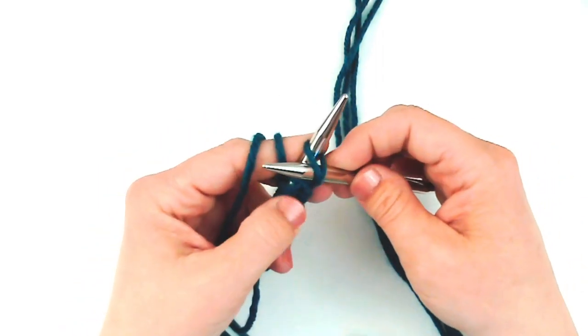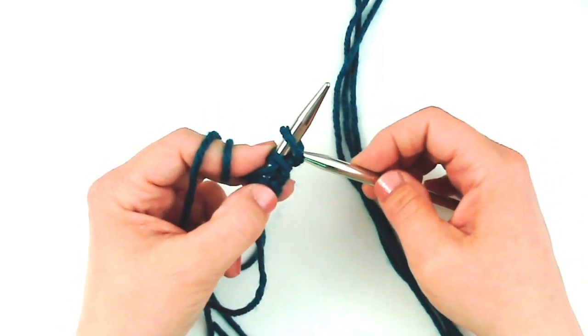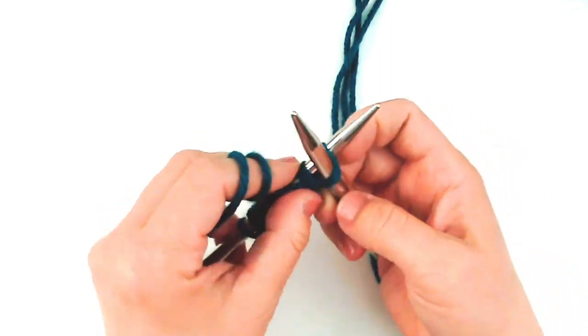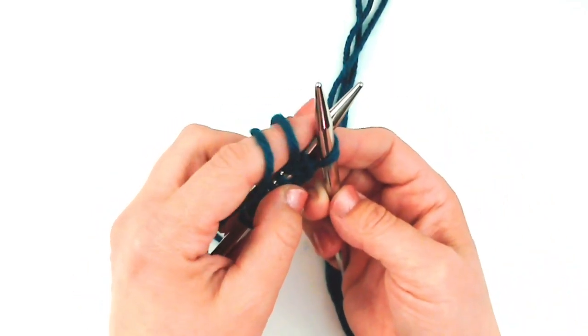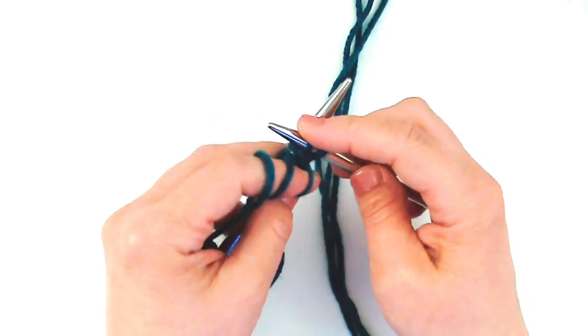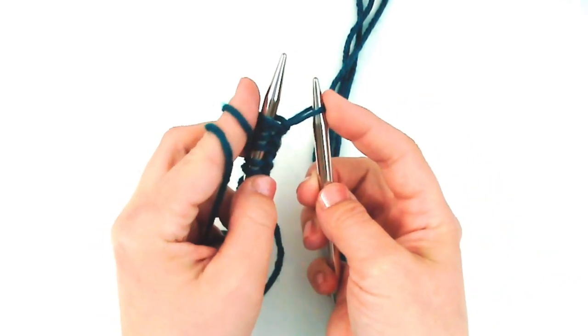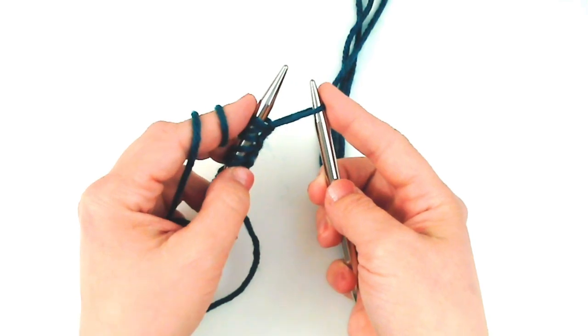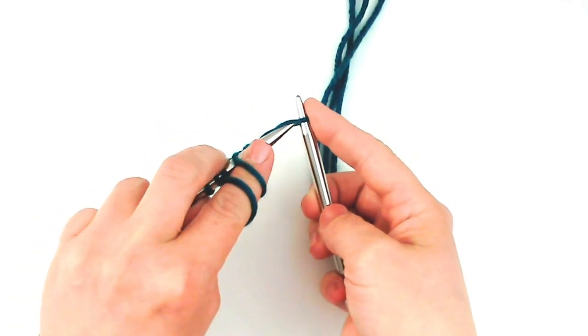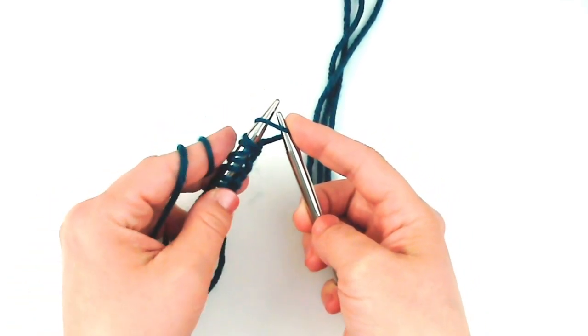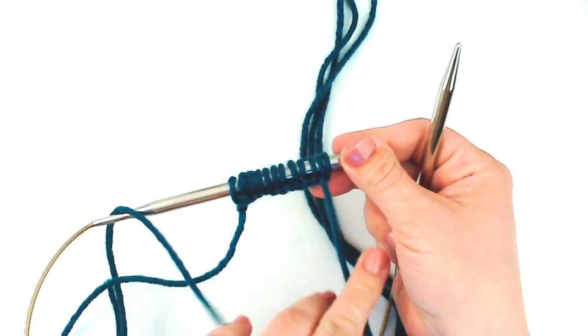So the key here is just making sure that your right-hand needle is coming from the back to the front between the first two stitches that are on the left-hand needle. And then you wrap like a purl and bring the stitch through. Once you have the new stitch on the right-hand needle, the left needle comes through, and up, and there you have it.